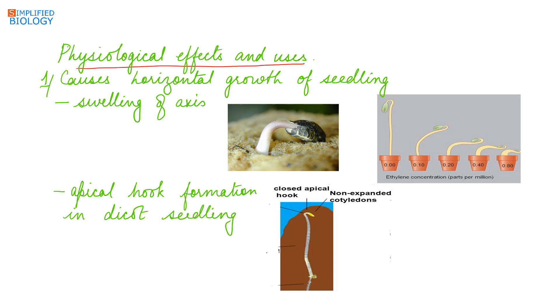We know that ethylene promotes transverse growth, so it causes horizontal growth of seedling. A seedling which grows erect when there is no ethylene will show horizontal growth as the concentration of ethylene is increased. It also causes swelling of axis, means the stem or shoot starts becoming thicker, and it forms apical hook in dicot seedling.